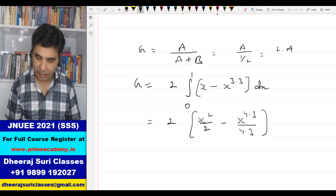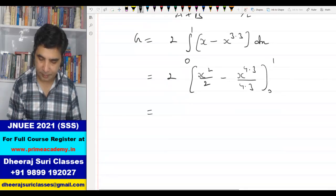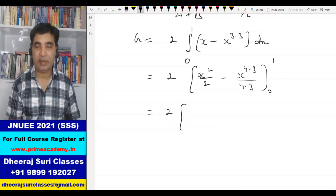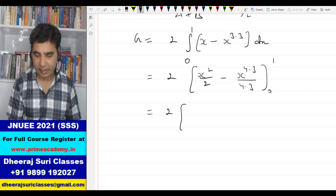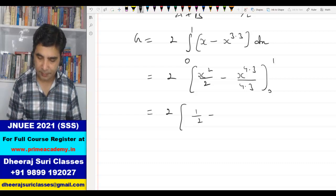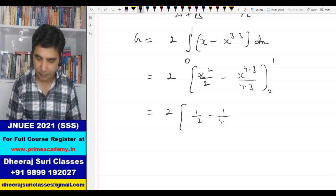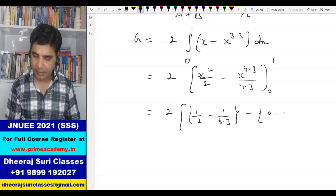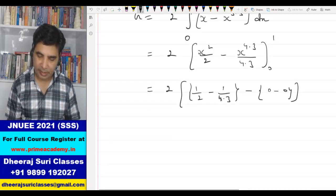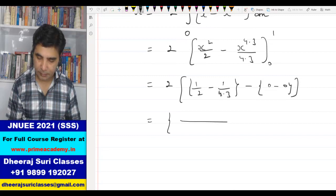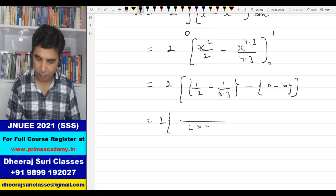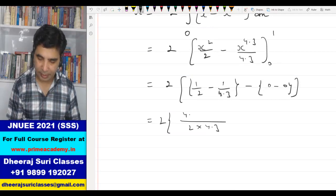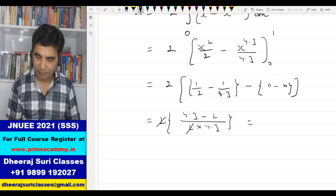Now we have to take the limits from 0 to 1. If you take the limits, first we take the upper limit, 1 power anything is 1, so 1 by 2 minus 1 by 4.3. And if you put 0, 0 by something is 0, so it is 0 minus 0. Now if we take the LCM, twice of 2 into 4.3, it is 4.3 minus 2. So this 2 gets cancelled, we are left with 2.3,